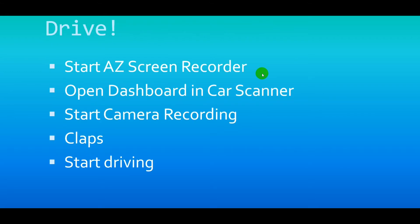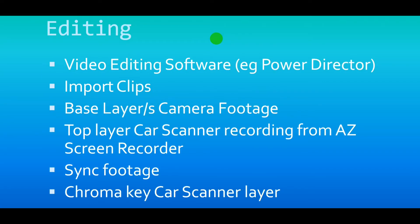To get the recording: start AZ Screen Recorder, open the dashboard in the Car Scanner app, switch on the camera, and start recording. I like to do some claps at the start of the footage just to sync the screen recorder with the camera — that's another great reason to have the sound option on in AZ Screen Recorder. Then just start driving.